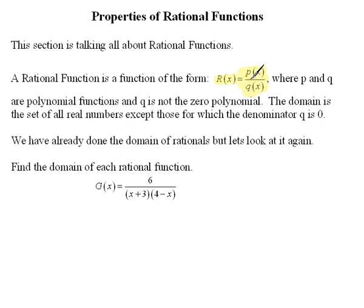Think about what P of X is. That's a function all in itself, a polynomial function. Q also is a polynomial function. So we're talking about a rational function being a polynomial over a polynomial.